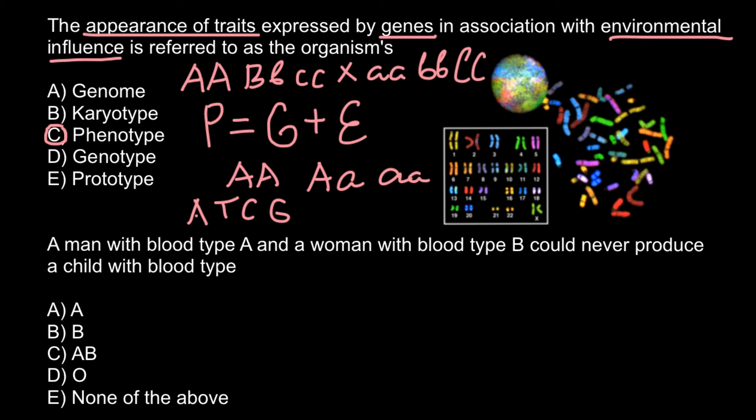Next question: a man with blood type A and a woman with blood type B could never produce a child with blood type... and we have to choose which blood type these two people cannot produce.